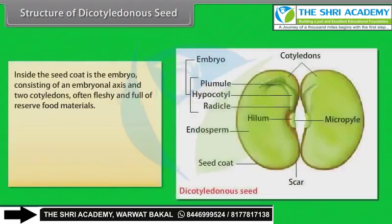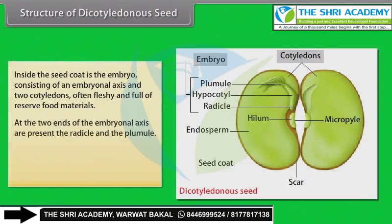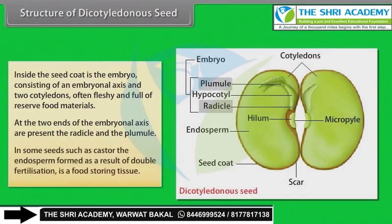Inside the seed coat is the embryo, consisting of an embryonal axis and two cotyledons, often fleshy and full of reserved food materials. At the two ends of the embryonal axis are present the radicle and the plumule. In some seeds such as castor, the endosperm formed as a result of double fertilization is a food-storing tissue.